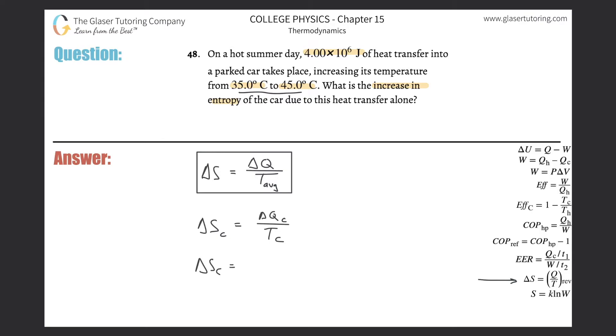On trying to understand what the important values are: the change in heat energy that the car experienced was a gain because the heat energy was added - it said transfer into. So that's going to be a positive value, so that's 4 times 10^6, then divided by the temperature of the car.